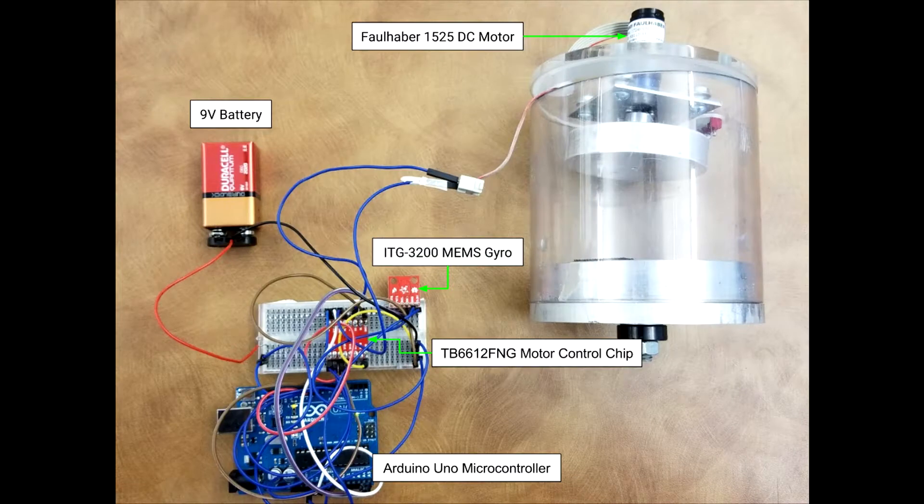The schematic for the circuit used is displayed here. The gyro is connected to analog pins on the Arduino for proper data transmission. The Arduino supplies 3.3 volts to the gyro. The Arduino also feeds in analog inputs to the motor driver, which are dictated based on motor control functions explained later. The motor control chip communicates this information to the DC motor, which then spins accordingly. The Arduino supplies 5 volts to the control chip, and an external battery provides 9 volts to the actual motor.